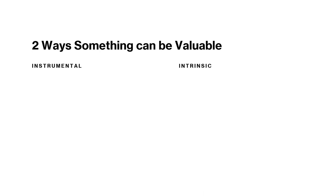That is the distinction between an instrumental and an intrinsic, or non-instrumental, good. There are two ways that something can be valuable or good. One is that it can be good instrumentally; the other is that it can be good non-instrumentally — the more common term is intrinsically. Something is instrumentally good if it is good for the sake of something else. Something is intrinsically good when it is good in and of itself. Let's take a look at a few examples.